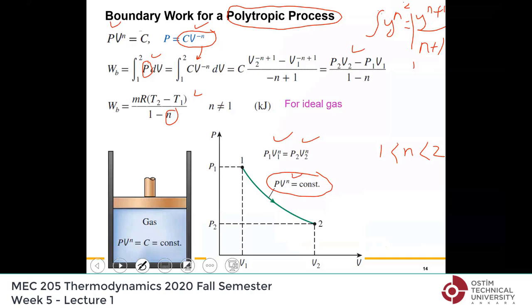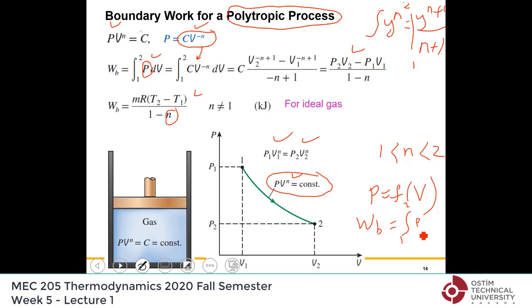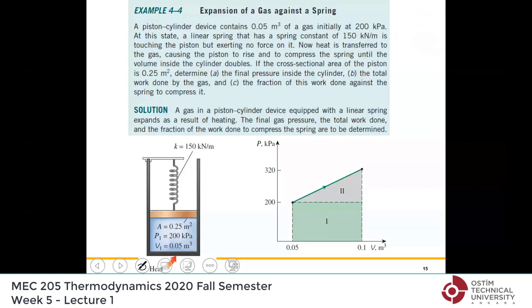So it's a simple integration. In a problem you may be given any relation P as a function of V, and by performing the integration W_b = integral from 1 to 2 of f(V)·dV, you can determine the work done.